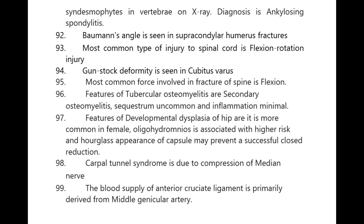Features of tubercular osteomyelitis include secondary osteomyelitis, sequestrum is uncommon, and inflammation is minimal. Features of developmental dysplasia of hip: it is more common in females, oligohydramnios is associated with higher risk, and hourglass appearance of the capsule may prevent a successful closed reduction.